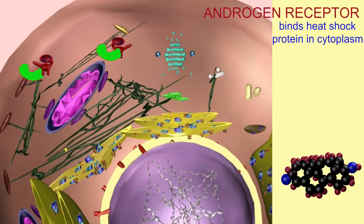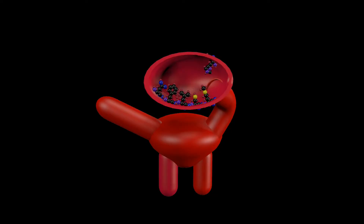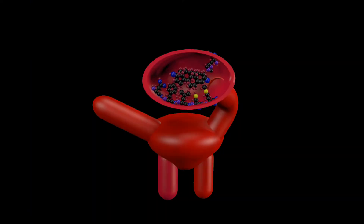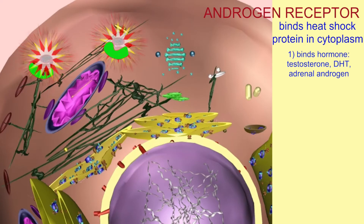Before binding androgen hormones, androgen receptors are located in the cytoplasm where they have associated with heat shock proteins. Upon binding the androgen hormone — which could be testosterone, dihydrotestosterone, or one of the adrenal androgens — the androgen receptor will dissociate from the heat shock protein and change shape.